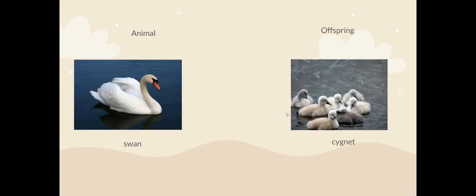A swan's offspring is called a cygnet. What is the same and what is different about a swan and a cygnet? Cygnets are much smaller and they also have a different colour beak.